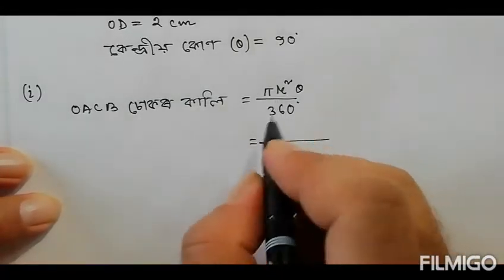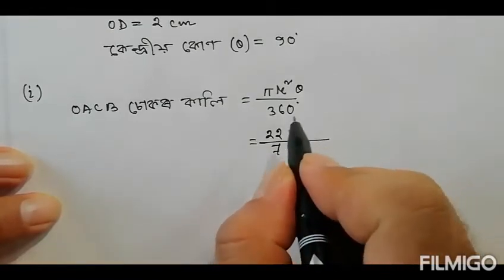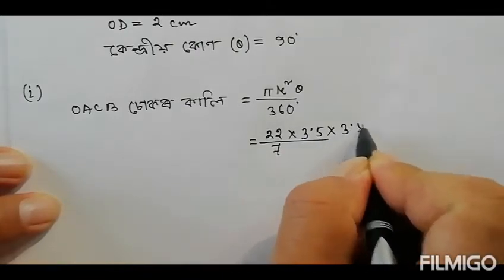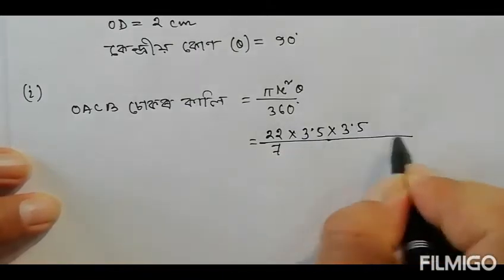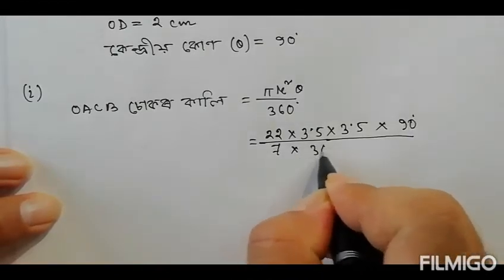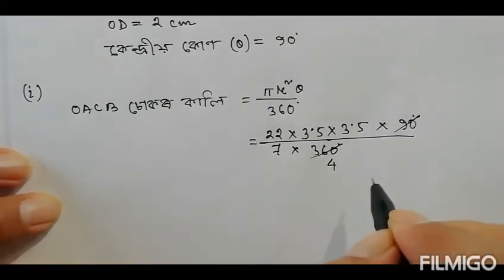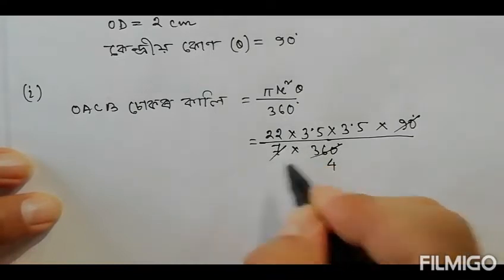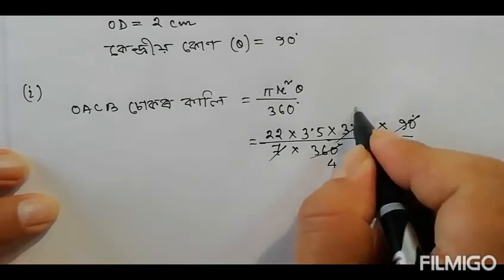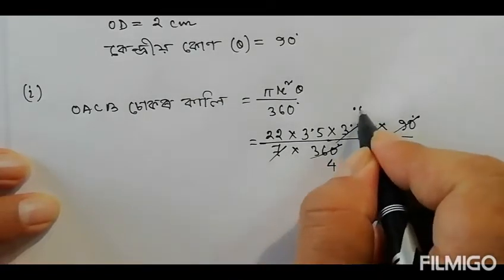So if pi is 22 by 7, and r is 3.5, then r squared is 3.5 by 3.5. Theta is 90 degrees out of a total of 360 degrees. So 90 over 360 times 22/7 times 3.5 times 3.5.